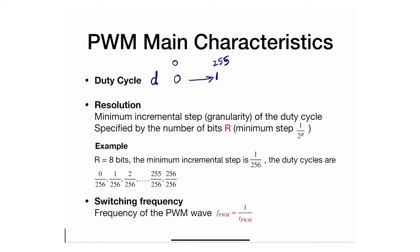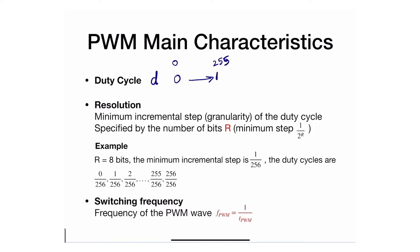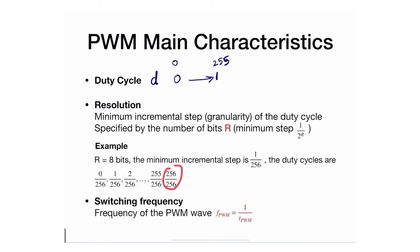We'll discuss the 256 versus 255 distinction in later videos. The point is you are dividing the range between 0 and 1 into 256 intervals, each one of which is 1 over 2 to the power R. In the case of 8 bits, each interval is 1 over 256. So at count 0 you have 0/256 as the duty cycle, then 1/256, 2/256, all the way to 256/256.